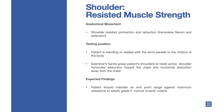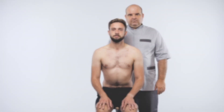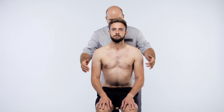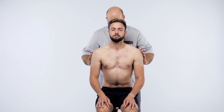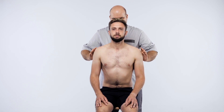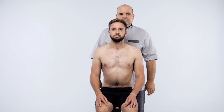Anatomical movement — shoulder resisted protraction and retraction, also referred to as transverse flexion and extension. Testing position: patient is standing or seated with the arms parallel to the midline of the body. Examiner's hands grasp the patient's shoulders to resist active shoulder horizontal adduction toward the chest, and horizontal abduction away from the chest. Expected findings: patient should maintain an end-point range against maximum resistance to satisfy grade 5 normal muscle criteria.